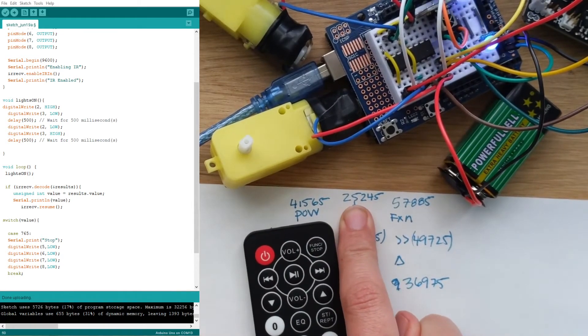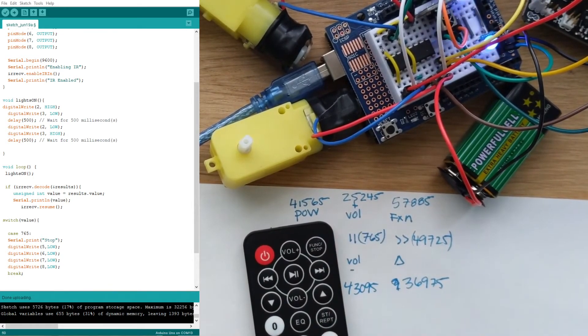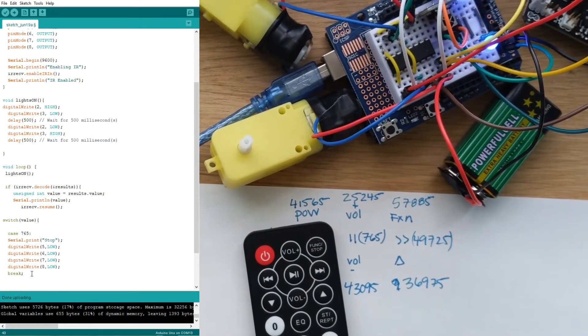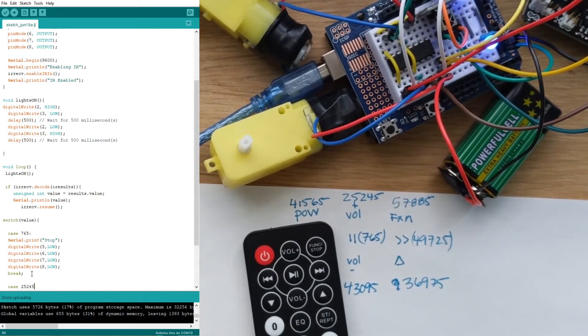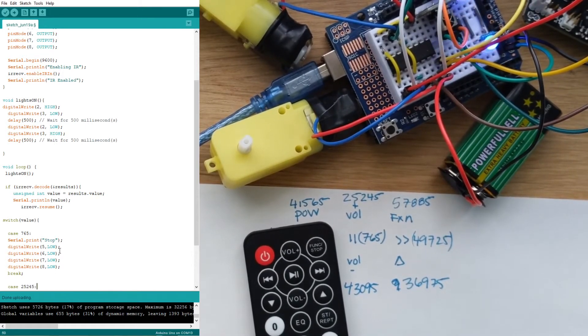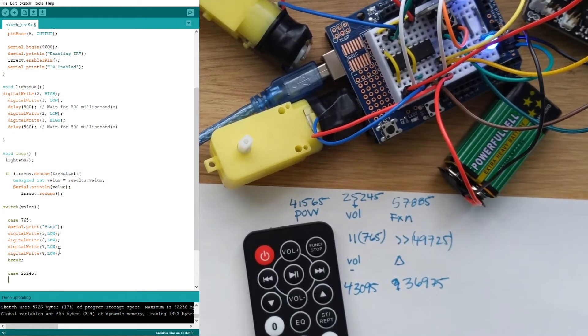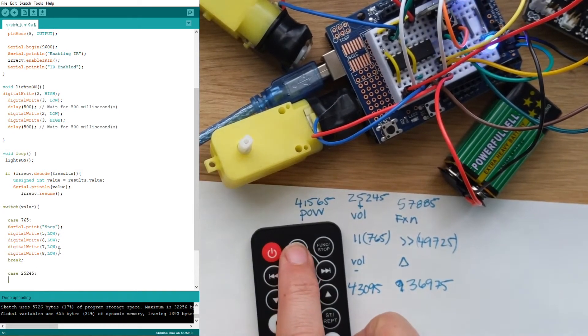I could go over into my Arduino IDE and write case number 25245 and put my full colon there. Now I'm going to write everything that I want to do when this button is pressed.